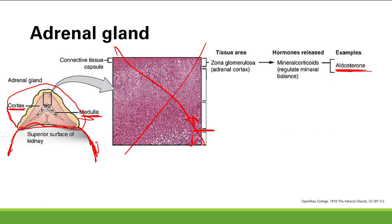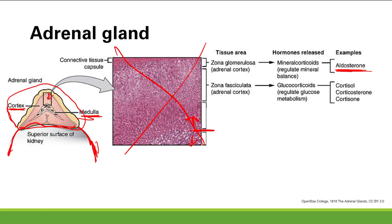Going deeper, the next layer is the zona fasciculata, which is responsible for making glucocorticoids. Glucocorticoids regulate glucose metabolism, as well as many other things. The main glucocorticoid you need to know is cortisol, though there are a few others.